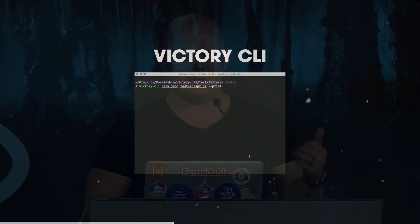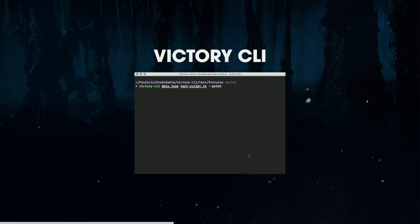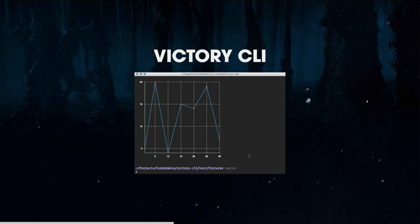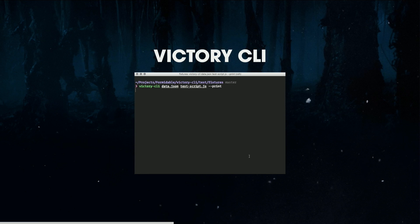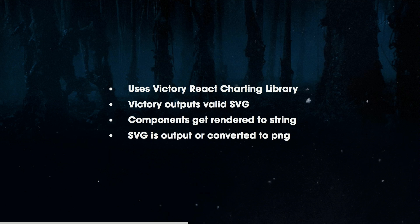Another fun one is Victory CLI. You guys just heard about Victory. Victory CLI lets you render charts to the command line. The way it does that is because Victory outputs valid SVG — so it was actually super easy. You just render it to string and you're good to go. You can convert it to PNG, and if you're in the right terminal, you can see it or save it.